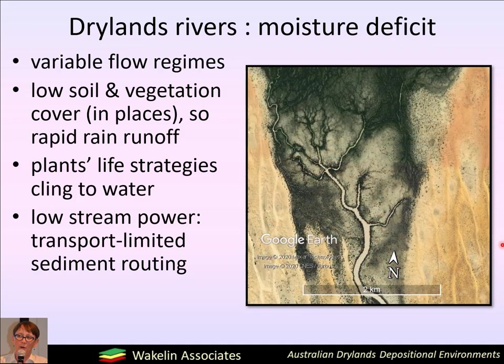Finally, because of the episodic nature of the flow and the often small volume of flow events, drylands rivers tend to be transport limited in their sediment routing. Here's an example in Cooper Creek where the sands that have come out of this channel have not gotten very much further than the various distributary arms of the channel terminus.